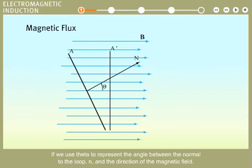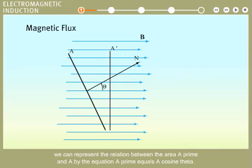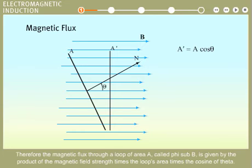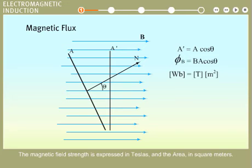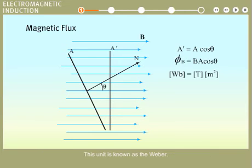If we use theta to represent the angle between the normal to the loop N and the direction of the magnetic field, we can represent the relation between area A prime and A by the equation A prime equals A cosine theta. Therefore, the magnetic flux through a loop of area A, called phi sub B, is given by the product of the magnetic field strength times the loop's area times the cosine of theta. The magnetic field strength is expressed in Teslas and the area in square meters, so the units of magnetic flux are Tesla-square-meters. This unit is known as the Weber.